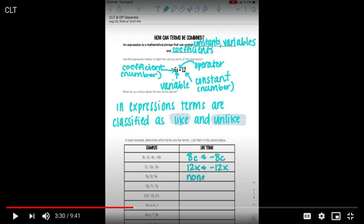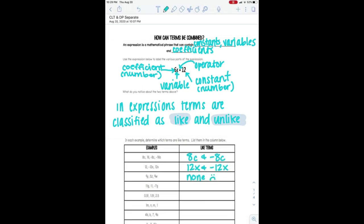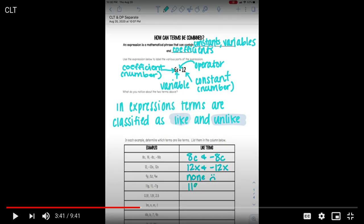And looking at the third example, we have no like terms there because I have 9y, 5z, and 9w. And if you look, none of them have the same variable attached to them. So they are not like terms, okay? So I want you to pause the video here. And I want you to do the rest on your own. Okay?